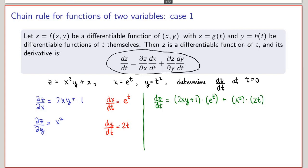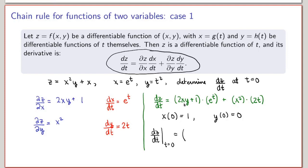Now I want to calculate the value of this derivative at t equals zero. I can evaluate x and y directly at t equals zero: x at t equals zero is 1, and y at t equals zero is 0. Substituting into the expression: the first term gives (2·1·0 + 1) times e to the zero, which is 1 times 1, plus x squared (which is 1) times 2t (which is zero). So the end result equals 1.